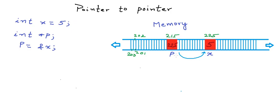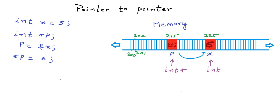One important thing here: we are able to store the address of x in p because p is of type pointer to integer. If p was of type pointer to character or pointer to some other type, the statement p = &x would not have been valid. So x is of type integer, and p is pointer to integer, or int*. Pointer variables are strongly typed because we also use the pointer variable to dereference the address and write some value there — so if I write a statement like *p = 6, the value at address 225, which is x, is now modified.